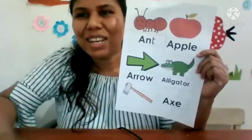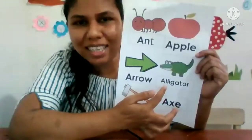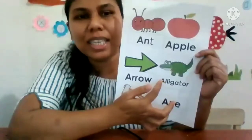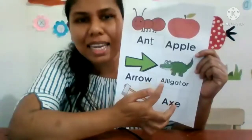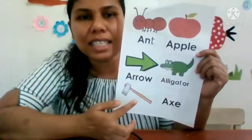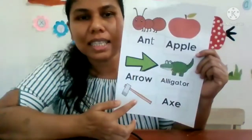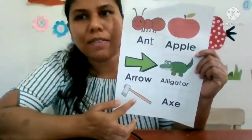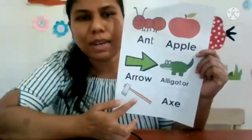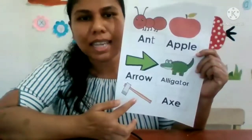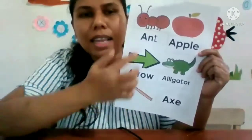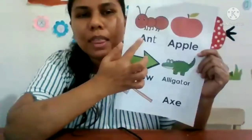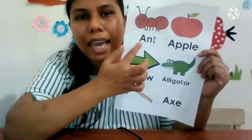Who is this? Alligator, right. Who is this? Alligator. And what is this? What is this? Yes, what is this? X. What is this? X. Yes. This is letter A.